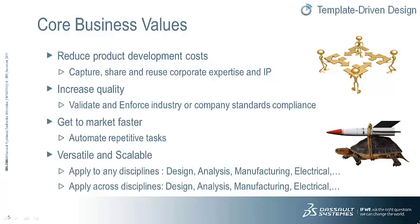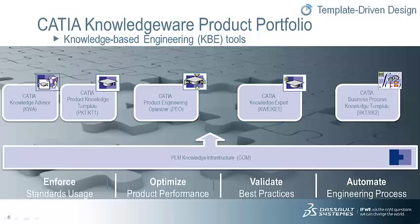CATIA KnowledgeWare is a suite of products and each product has a different purpose. You don't have to do the whole thing — they are scalable. The four columns represent the general value areas of CATIA KnowledgeWare: Enforce, Optimize, Validate, and Automate. Each one has different KnowledgeWare products associated with it.